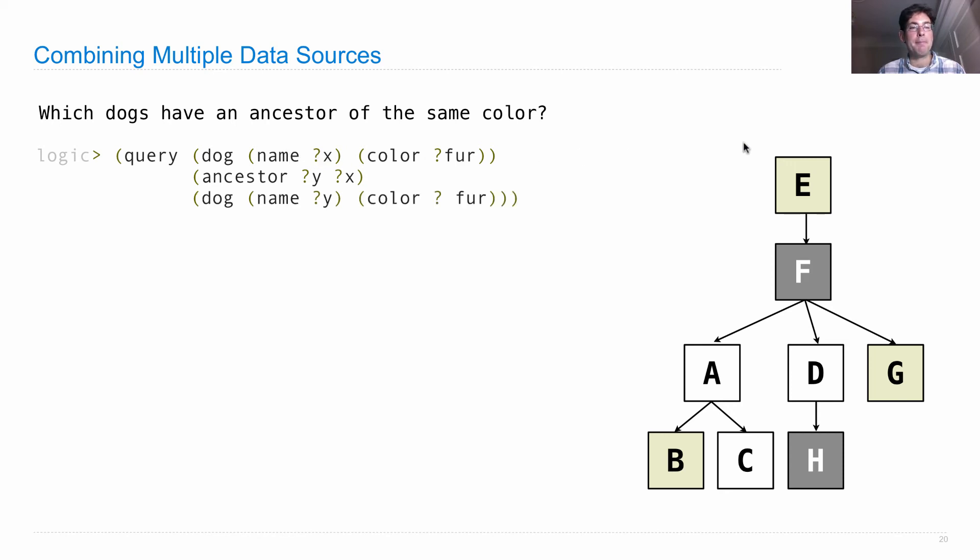We've already established that the dog has the name X and the fur color, fur, at the same time. The last piece is connecting the ancestor. It has to be the case that there's a dog by the name Y, the ancestor's name, who has the same color fur.